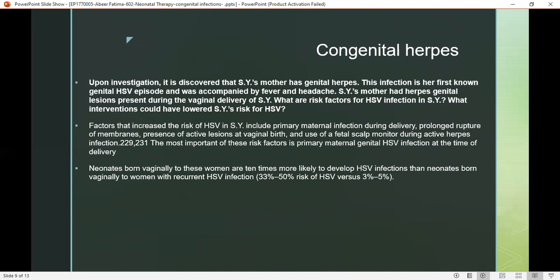Further investigation reveals that the mother of the child has genital herpes. This infection is her first known genital herpes simplex virus episode, accompanied by fever and headache. The mother had genital herpes lesions present during vaginal delivery. Risk factors for infection in the child include primary maternal infection and prolonged rupture of membranes, with primary maternal genital herpes simplex at the time of delivery being the most important risk factor.